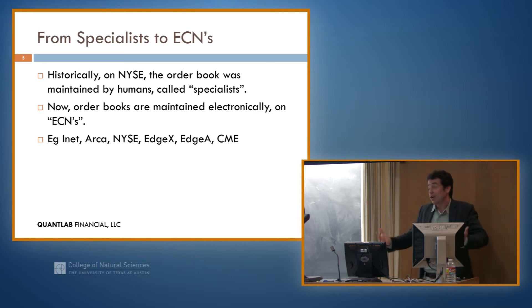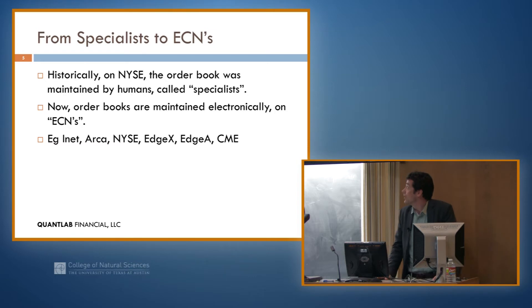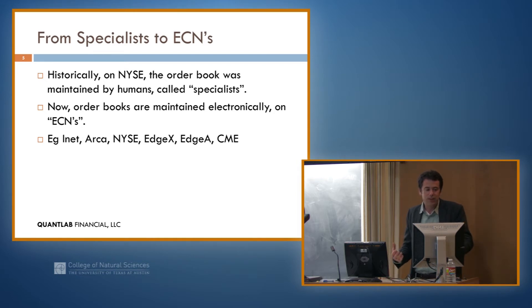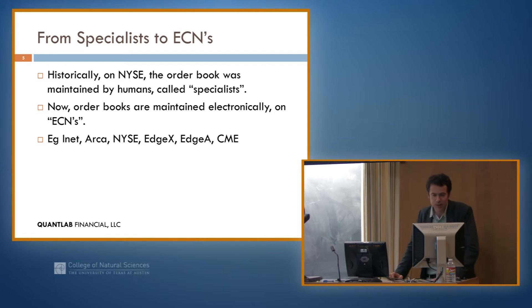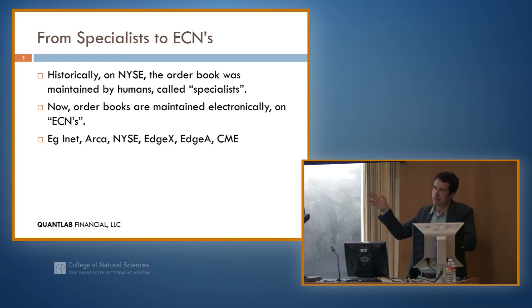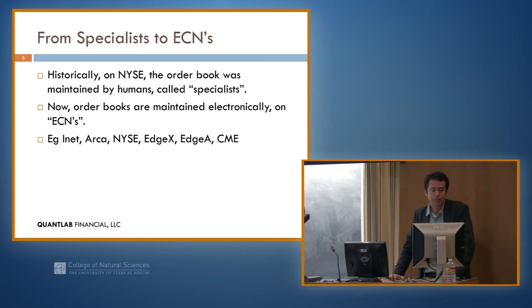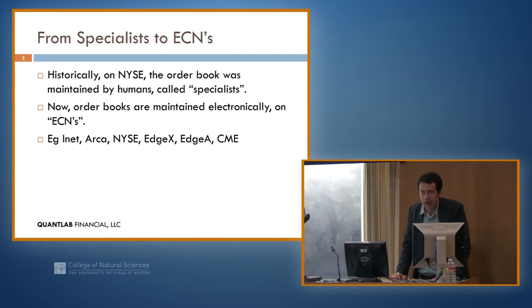Historically, this structure has been around for a long time. The New York Stock Exchange is an old institution that basically worked the same way when it was set up, except it was actually maintained by people. Actual humans called specialists would keep track of the best bid and best offer. They would step in if there wasn't enough liquidity available and offer a price just so that some market was available. But that's sort of gone by the wayside — now it's a very different landscape and it's just computers making these markets.